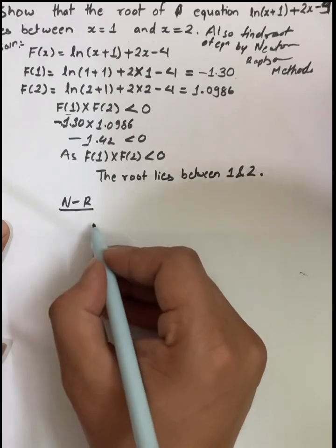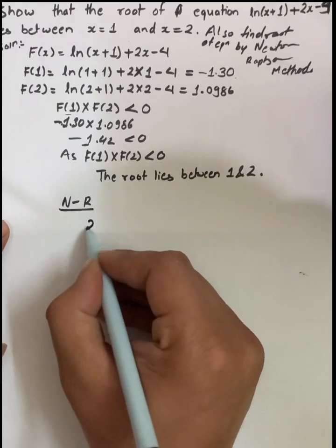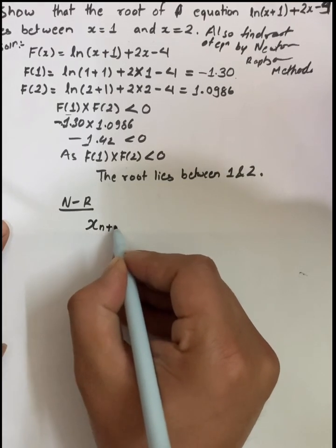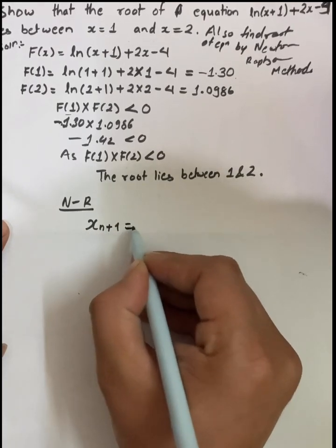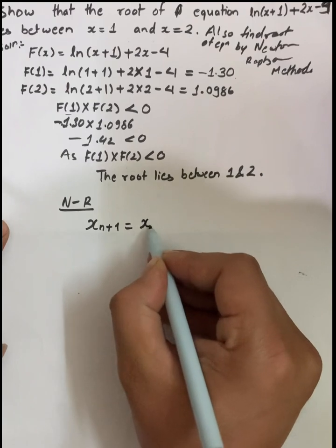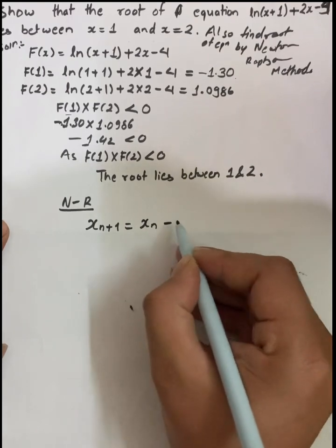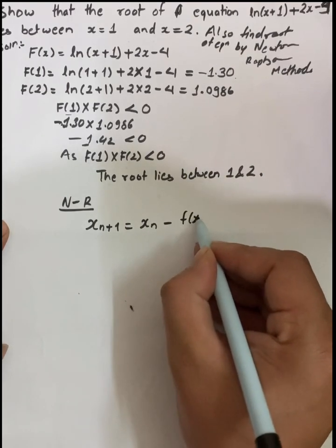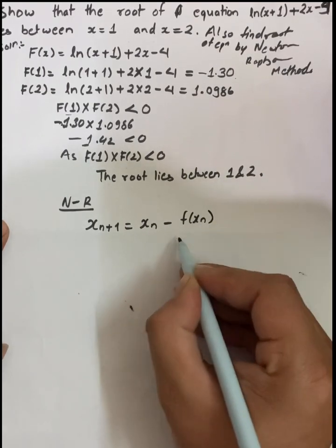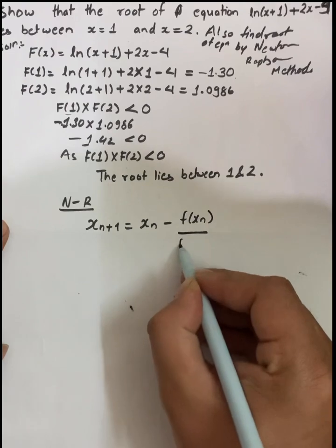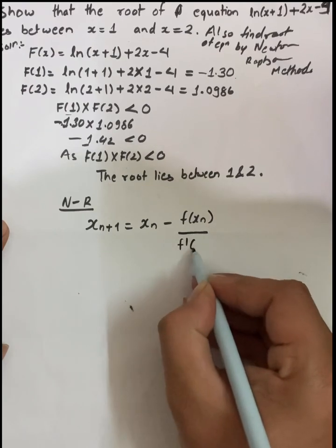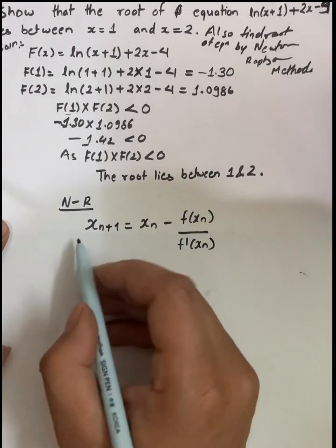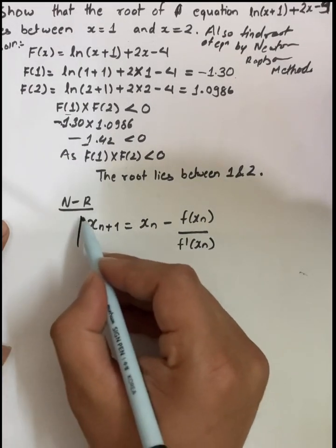The Newton-Raphson formula is: x_{n+1} = x_n - f(x_n) / f'(x_n). This is the formula you need to use.